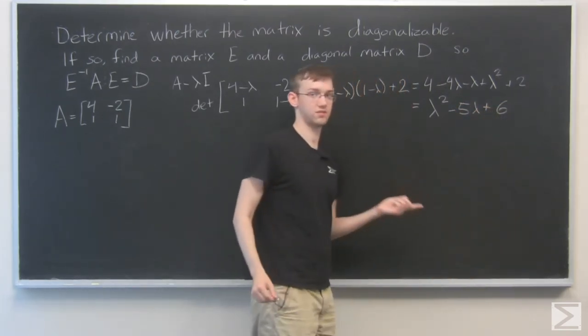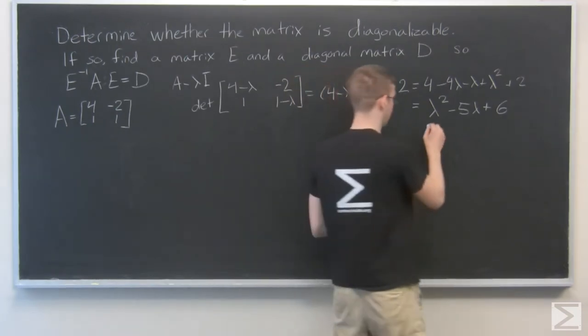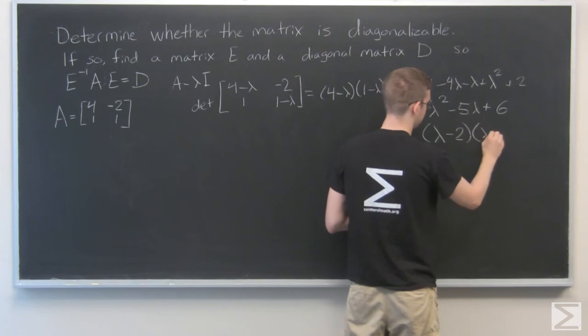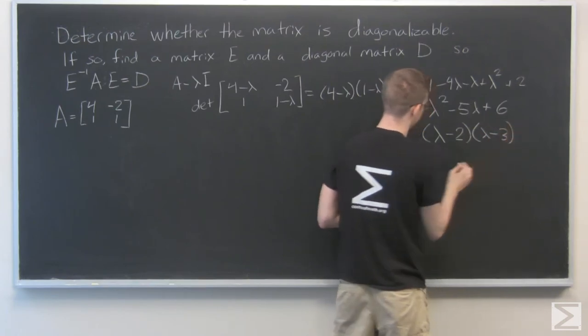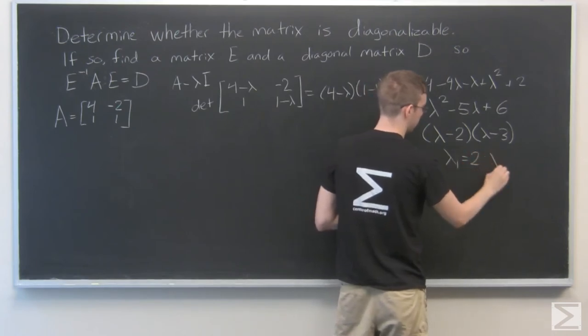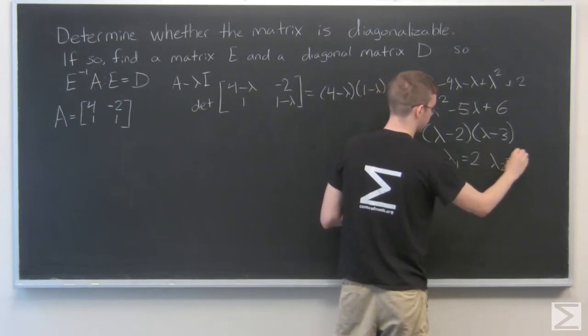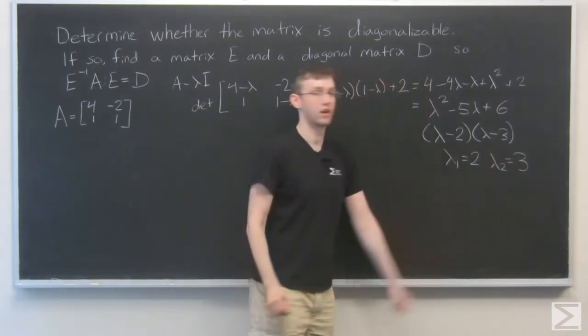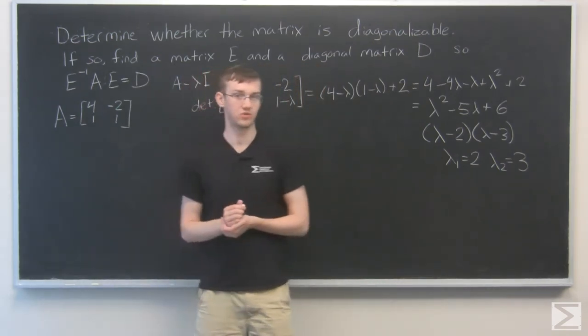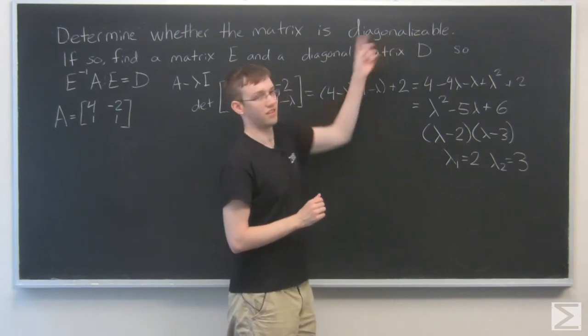Luckily, this is easy to factor. That's lambda minus 2 times lambda minus 3, and that will give us lambda 1 is equal to 2, lambda 2 equals 3. Cool. They are distinct. They're not the same number, so that means that this matrix is indeed diagonalizable.